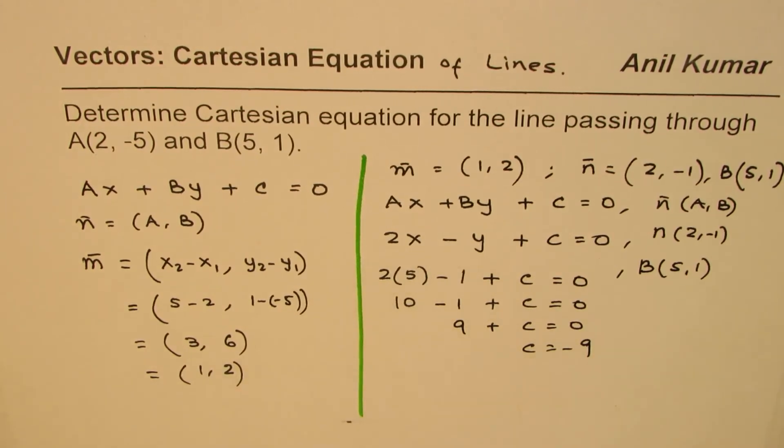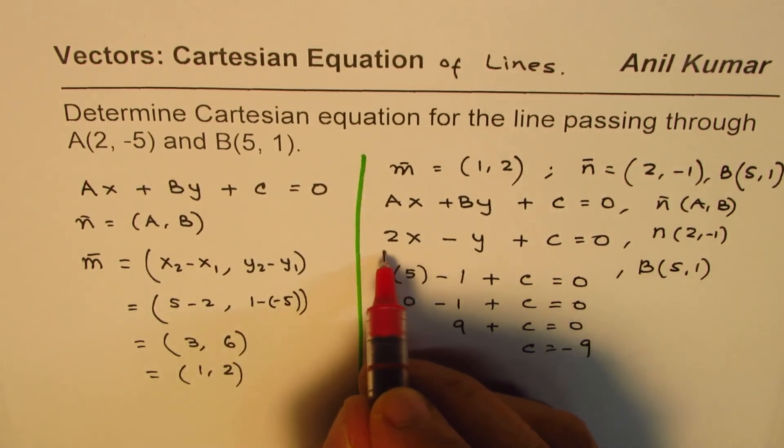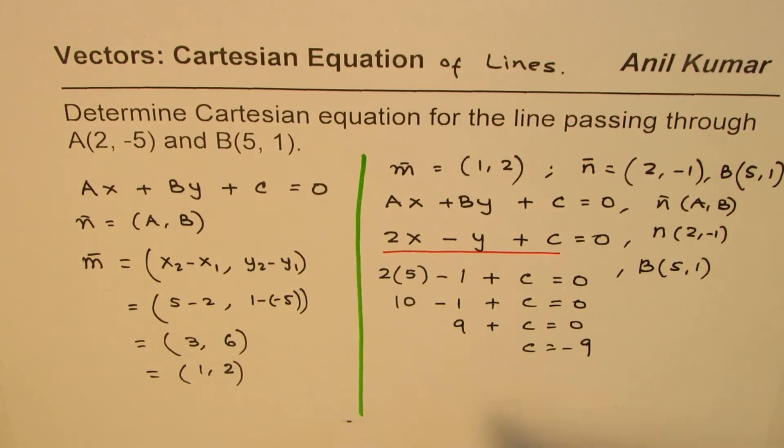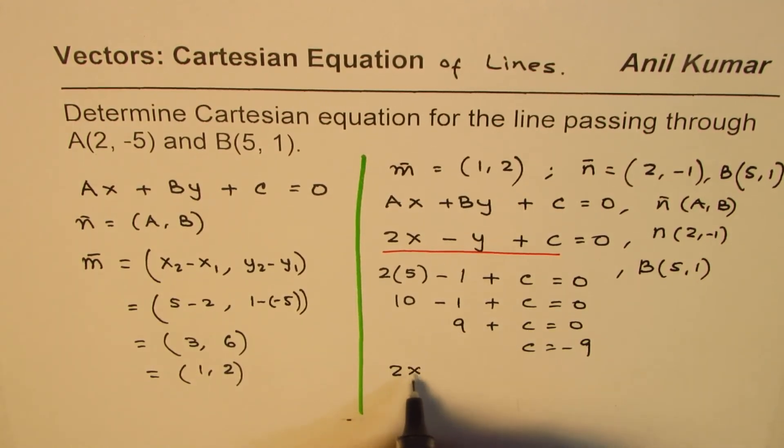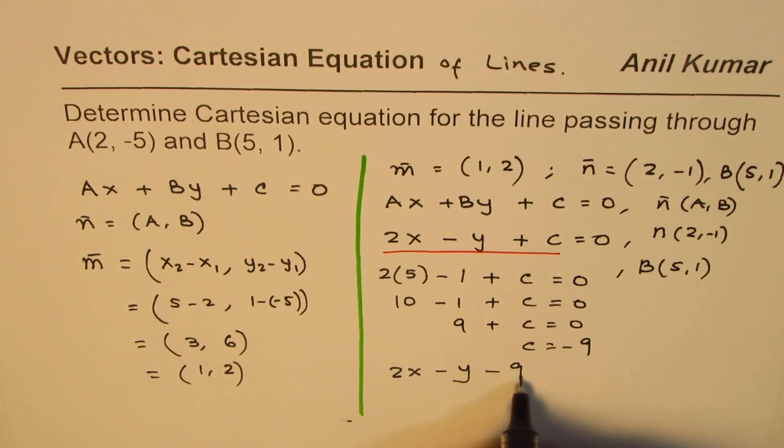So that gives us the equation. So we will substitute here the value of C to get our equation which is 2x - y - 9 = 0.